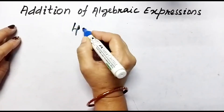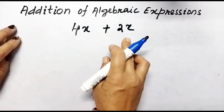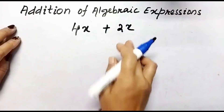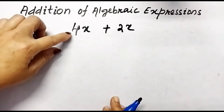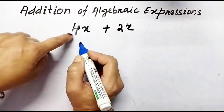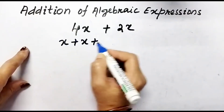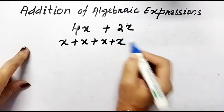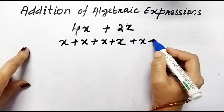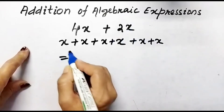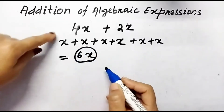Let us take one example: when 4x is added to 2x. Here these two terms are like terms. Before addition, let us understand what 4x means. 4x means 4 times x, or x added 4 times. Similarly, 2x means x added 2 times. So after adding, we get 6x. This is the sum of 4x and 2x.